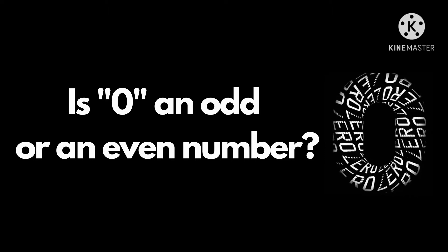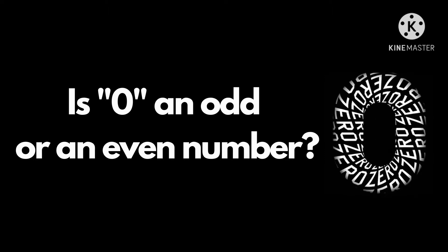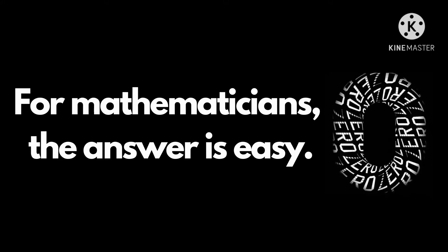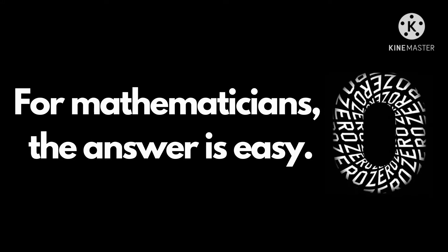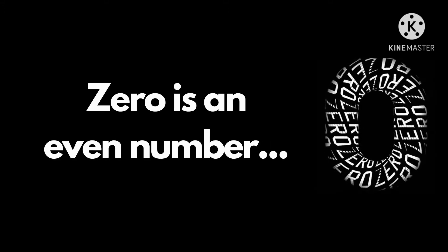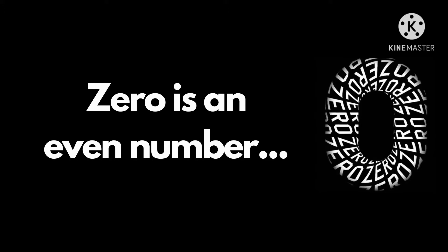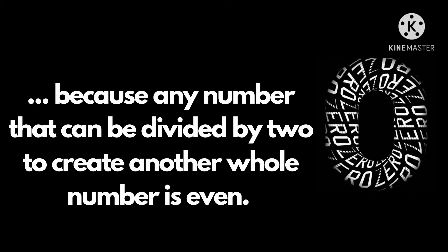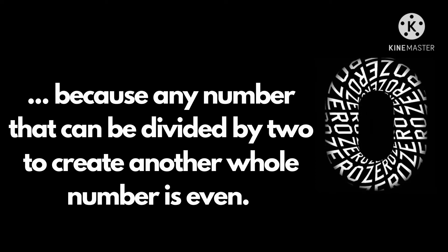Is zero an odd or an even number? For mathematicians, the answer is easy: zero is an even number, because any number that can be divided by 2 to create another whole number is even.